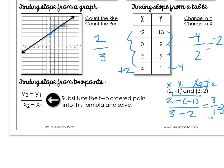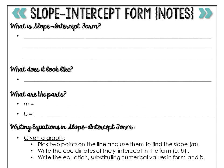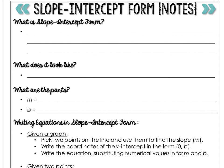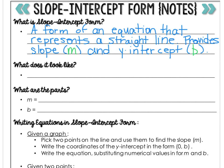So to write in slope-intercept form — first, what is it? It's a linear equation that represents a straight line, and the equation provides the slope and the Y-intercept. Slope-intercept form always looks like Y equals MX plus B, where M is the slope and B is the Y-intercept.